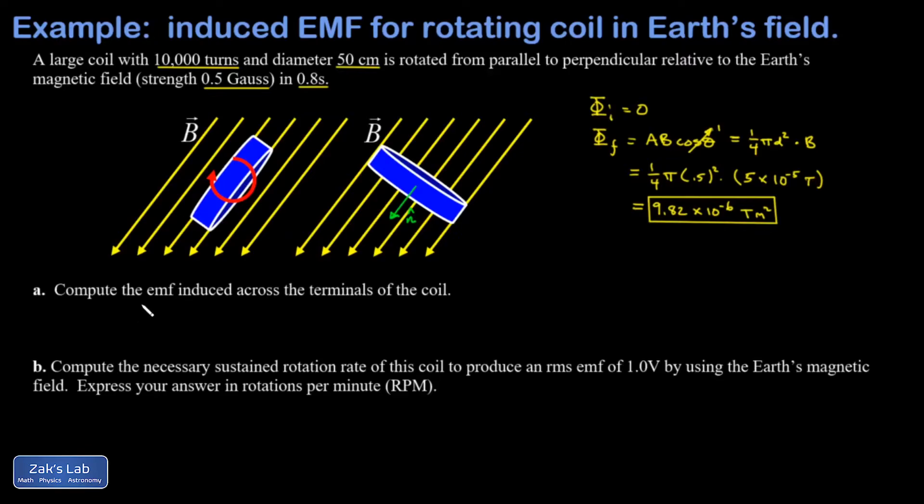I'm just going to write this for the magnitude of the induced EMF because we don't care about the direction. That's going to be N—that's the number of loops, that's where it comes into the calculation—times the rate of change in the magnetic flux through one loop. We have 10,000 loops, and we have a change in flux that's final minus initial. Because the initial was zero, this is simple. It's just the final value over the amount of time it took to change that flux, that was 0.8 seconds, and I get 0.123 volts induced.